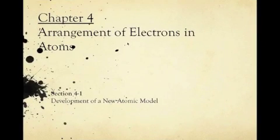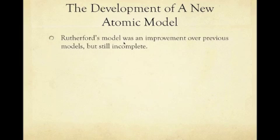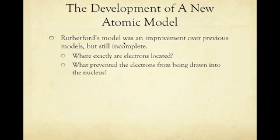Okay guys, let's go ahead and jump into chapter four. In this chapter we're going to start talking about the arrangement of the electrons in the atom, but first we're going to talk about the new atomic model. In the previous chapter we talked about Dalton, Thompson, and Rutherford. The model that was created after all their work was done was an improvement over the previous models, but it was still incomplete. It didn't tell us exactly where the electrons were located and it didn't tell us what prevented the electrons from being drawn into the nucleus.